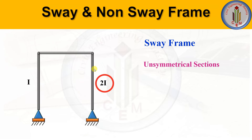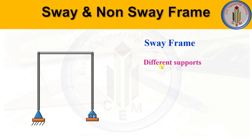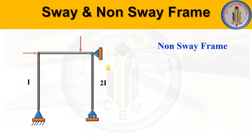Unsymmetrical sections also cause sway — for example, when the moment of inertia of one member is 2I and another is I. When horizontal members are not symmetrical, this creates sway in the frame. Unsymmetrical geometry, where the lengths of members differ, also causes sway. Finally, different support conditions on each side of the frame will also create sway.